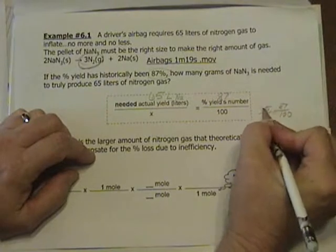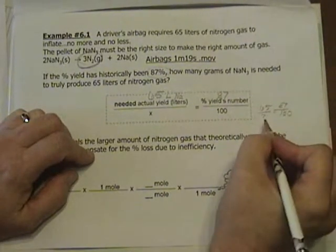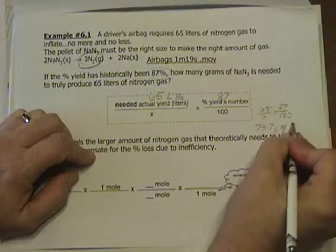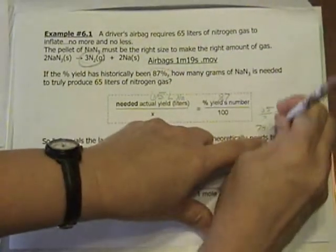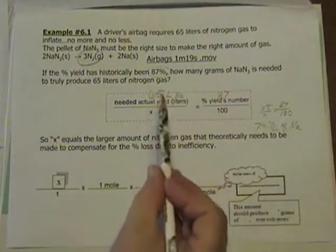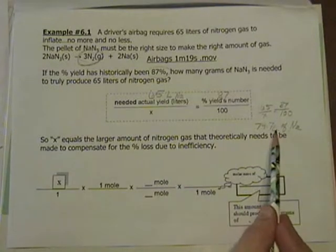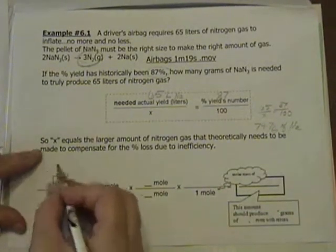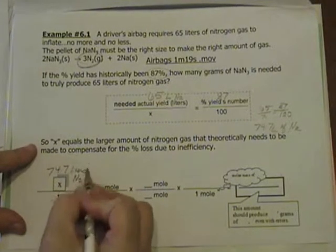65 over x equals 87 over 100. When you cross multiply, 65 times 100 divided by 87, x equals 74.7 liters of N2. This is saying that if we really need 65 liters, we're going to have to tend to make 74.7 liters because of inefficiency. That becomes our known, 74.7 liters of N2 gas.